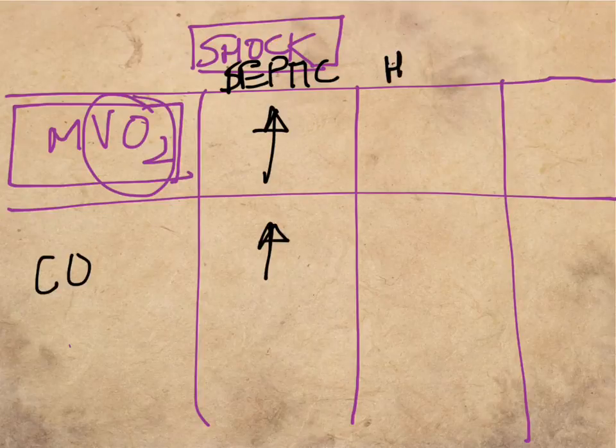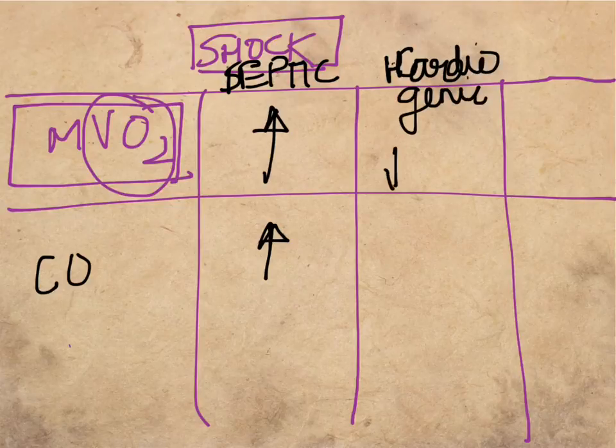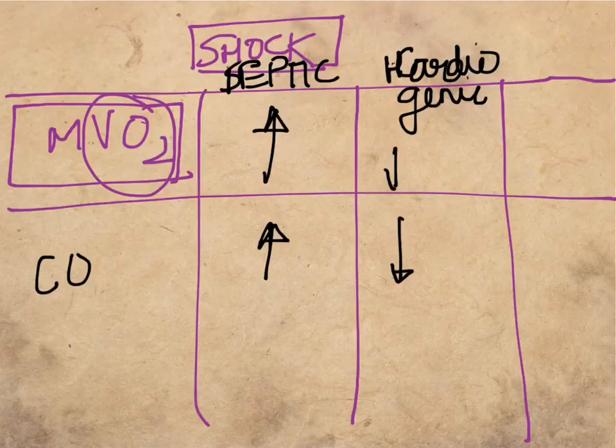Whereas in cardiogenic shock, the cardiac output is decreased, so the MVO2 is decreased.